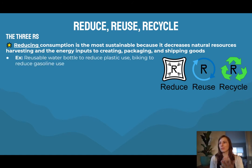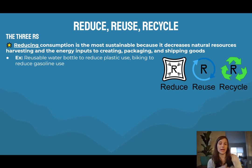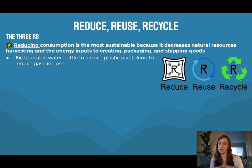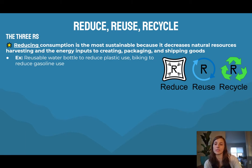An example of reducing would be using a reusable water bottle to reduce plastic use, biking to reduce gasoline use, or having a smaller wardrobe to reduce the amount of clothes you need. Reducing is the most sustainable of the three R's.